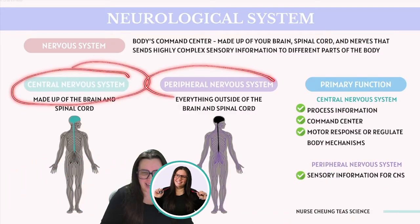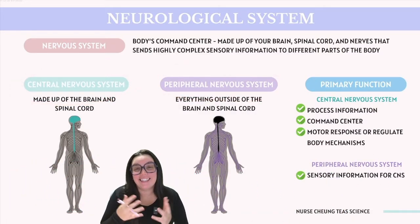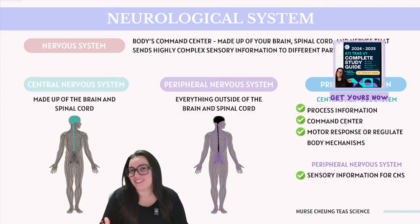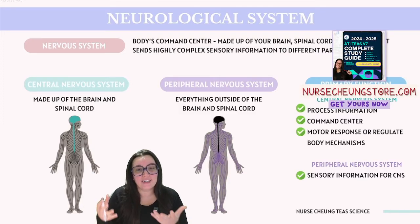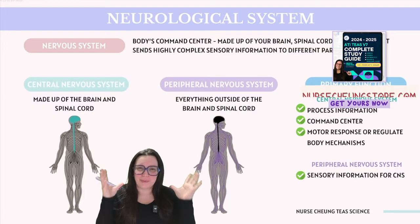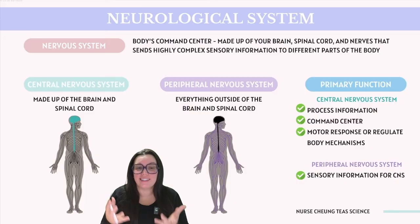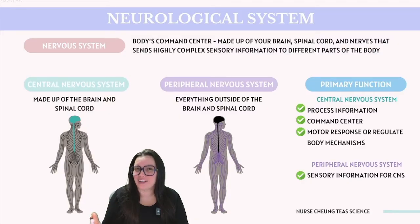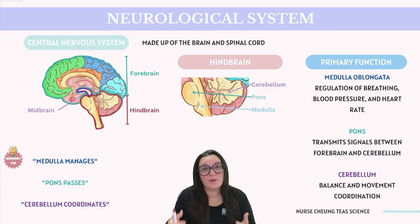Structurally, the nervous system is divided into two main regions: the central nervous system (CNS) and the peripheral nervous system (PNS). The CNS is comprised of the brain and the spinal cord, functioning as the primary command center for processing information. The PNS includes all nervous system elements such as nerves distributed throughout the body, gathering sensory information and relaying it to the CNS, which then processes that data, coordinates motor responses, and regulates bodily functions.